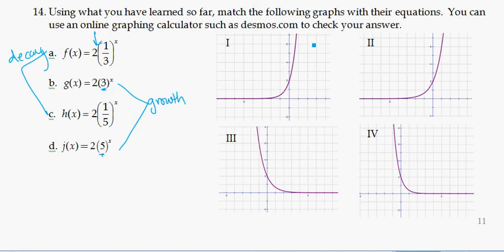So 5 to the x is going to grow much faster, this is going to be my d, than 3 to the x. This one's going up. They're both going up fast, but this one's going up even faster.